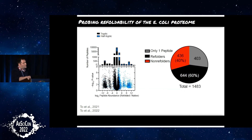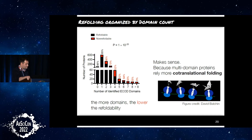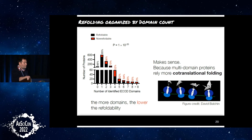In E. coli, we find roughly 60% of proteins are refoldable. The dataset I'll focus on is yeast, which surprisingly has an even higher refoldability index — something with a lot of interesting molecular biology associated with it. I'll use the yeast data because the trends are cleaner with very little aggregation in these experiments. Regarding what types of proteins are good at folding on their own: dividing proteins by the number of domains, we find cleanly that the more domains a protein has, the harder it is at folding. This makes sense because multi-domain proteins rely more on co-translational folding on the ribosome, where the first domain can fold before the second has even been synthesized.